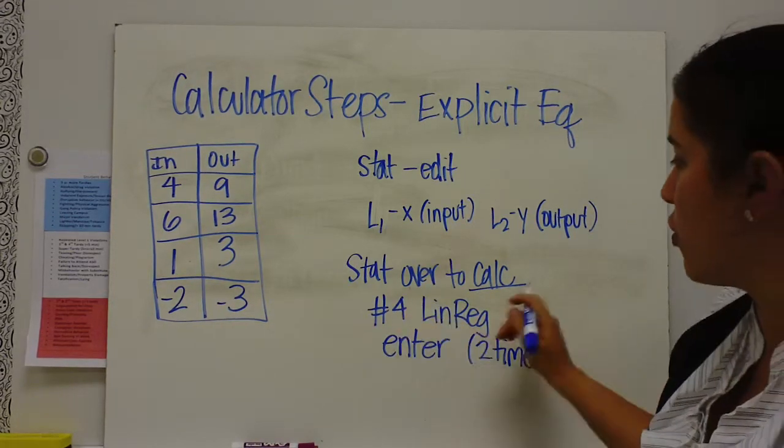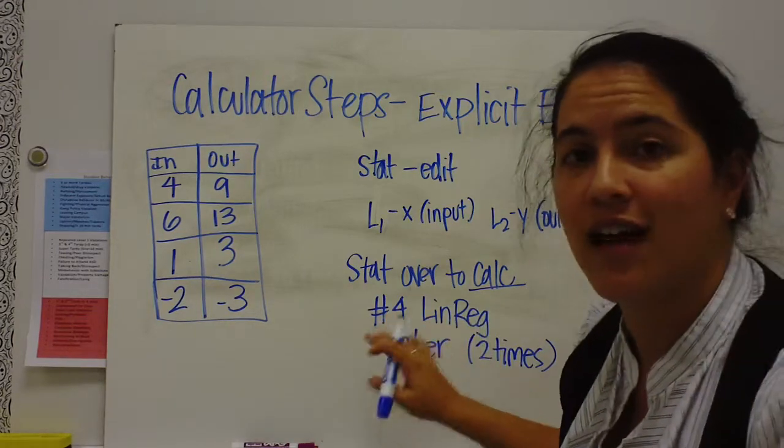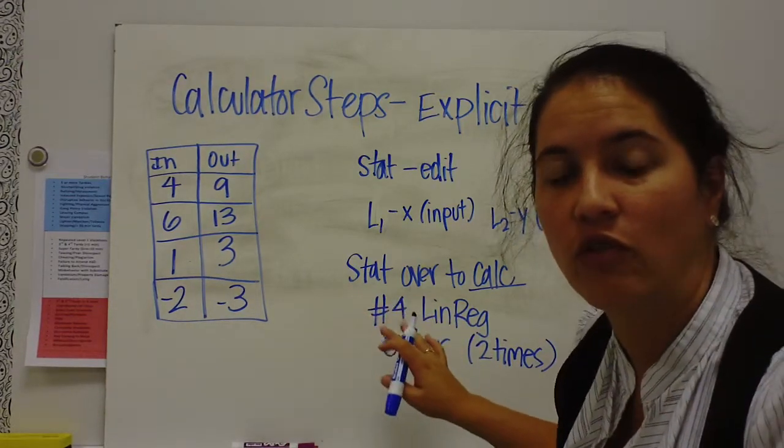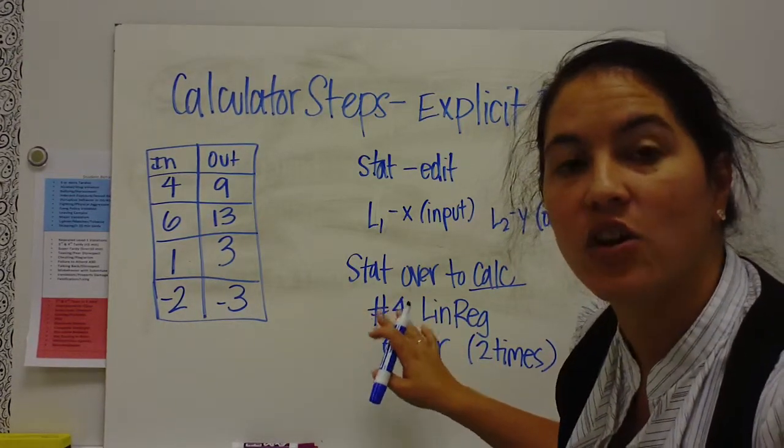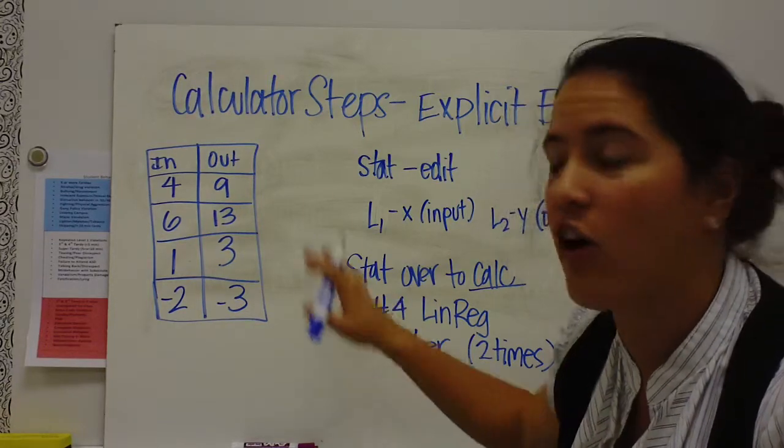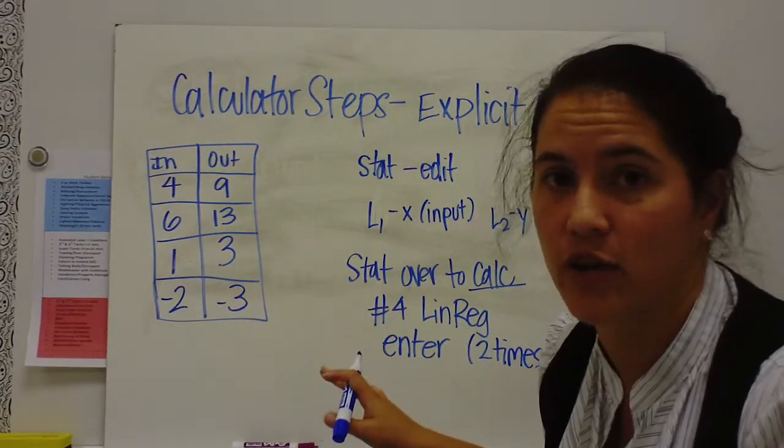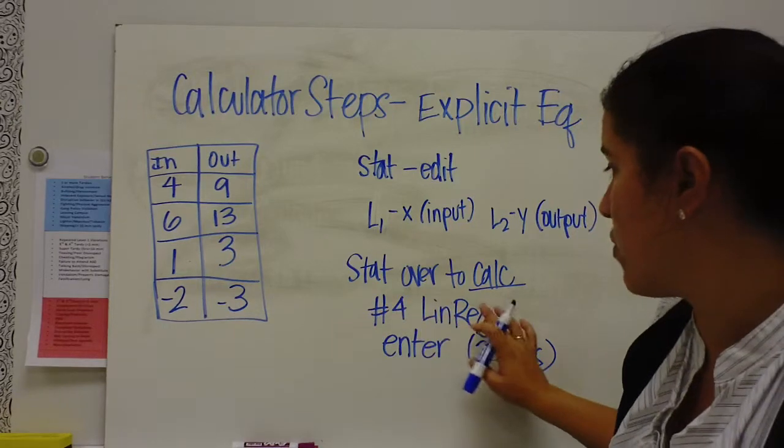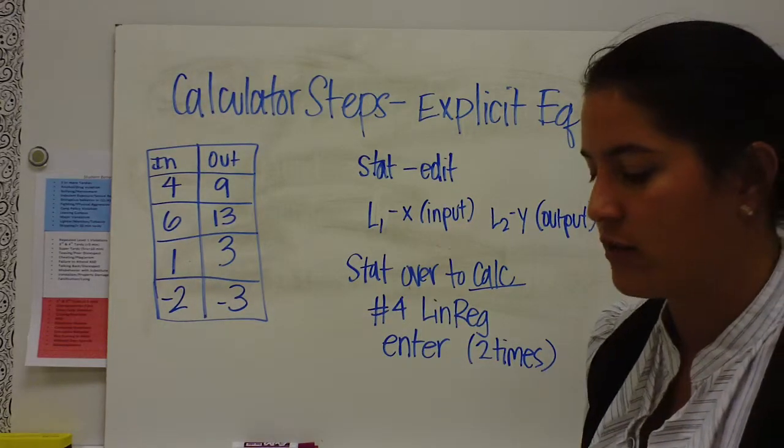Once you get to calc, you're going to do number 4, which is a linear line, a linear regression that's going to give you an equation for a linear graph. And all the ones we're doing right now are linear equations. So you're going to go to number 4, and when you press number 4,